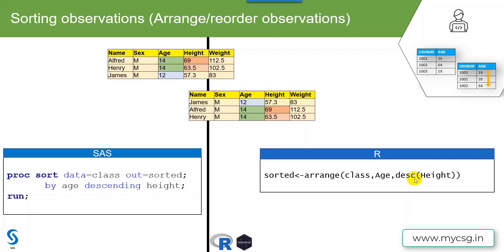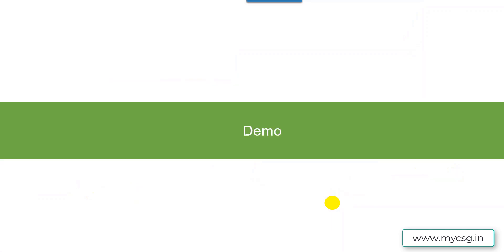To specify descending order in R, we use the keyword desc() and within that specify the name of the variable. So desc(height) is equivalent to the SAS 'BY age DESCENDING height'. This is how we can sort observations in R and SAS. Let us now move to the demo.